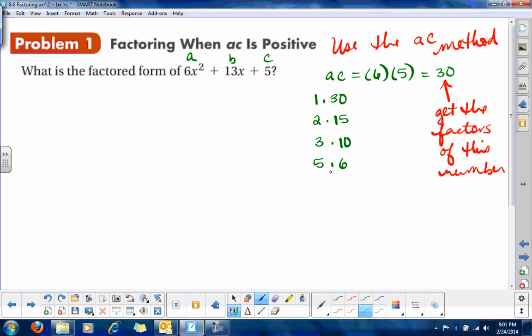Now, if you look at those factors, when you add them up, you want to make sure that you can get that middle term. So we want which one of those factors that when I add them, I'm going to get a positive 13. Well, there it is right there. 3 plus 10. So 3 plus 10 is equal to 13. So this is the one that we're going to use.